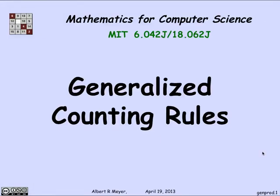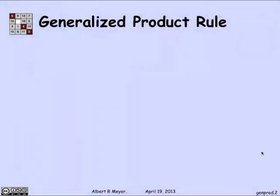There are two generalizations of the bijection rule and the product rule that come up all the time and are essential, play an essential role in the repertoire of any counter. So let's look at those. The first of these is a generalization of the product rule. And let's see an instance where it comes up.